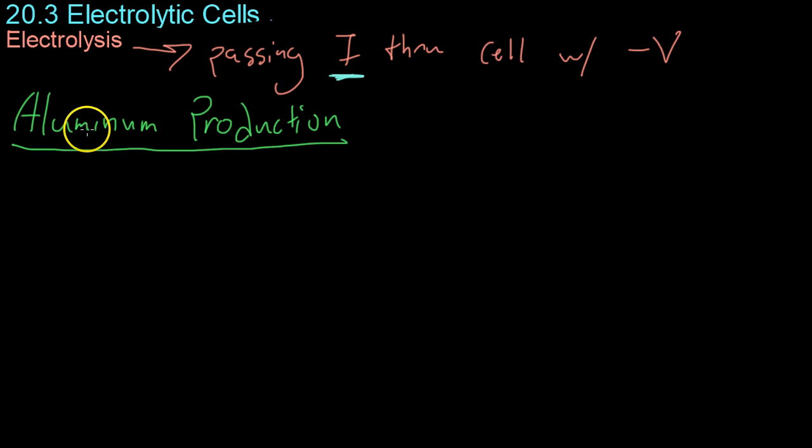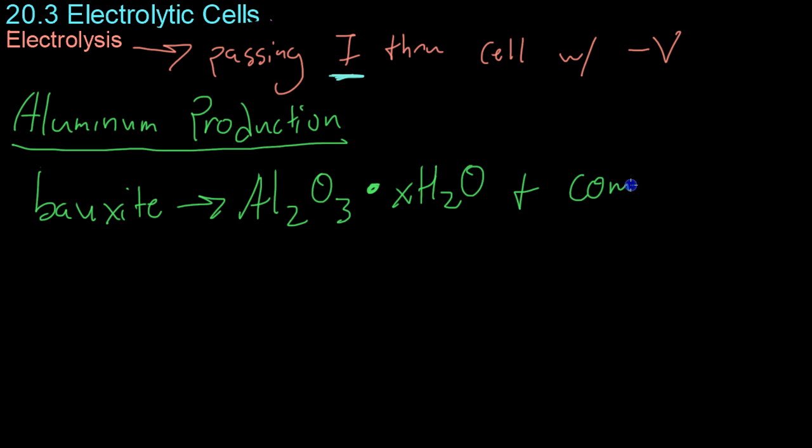So it is through the process of electrolysis that we actually have the cheap aluminum production that allows us to have cans in lightweight cars and whatnot that we use aluminum for every day. And this is because, although there's plenty of aluminum in the Earth's crust, it's usually tied up in a compound called bauxite, which is aluminum oxide, Al2O3, which is usually hydrated.